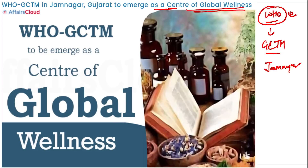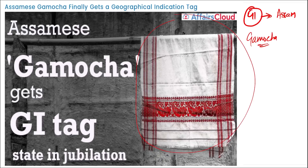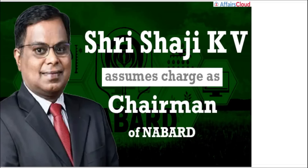A GI tag — Geographical Indication tag — was recently given to a product from Assam. The name of the product is Gamucha. It is a cotton-woven cloth with red strips. In Haryana it is also called Gamcha. Remember: which product from Assam recently got the GI tag? It is Gamucha.